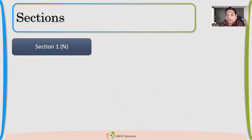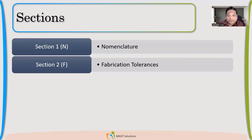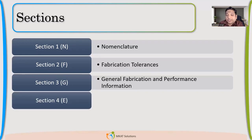Section one talks about nomenclature — it covers the nomenclature used in TEMA. Before reading any code or standard, you should be clear with the nomenclature. Section two talks about fabrication tolerances; all fabrication-related requirements and tolerances are covered there. Section three is general fabrication and performance — it includes the typical TEMA specification sheet format, nameplate requirements, and performance guarantee-related requirements.